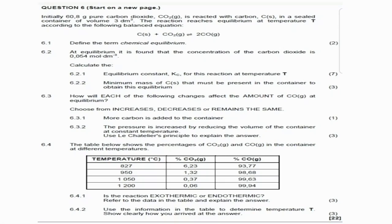Question 6.2.1 says: calculate the equilibrium constant Kc for this reaction at temperature T. Before we calculate Kc, let's interact with the balanced equation. Carbon is in solid state, carbon dioxide in gaseous state, and carbon monoxide in gaseous state. Concentration applies to molecules in gaseous or aqueous state, so we won't be including carbon in the Kc calculation — concentration does not apply to solid molecules.